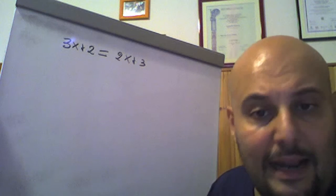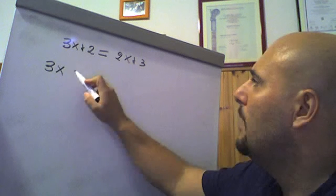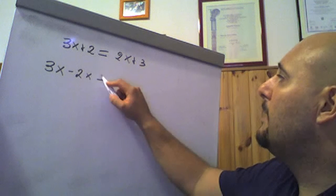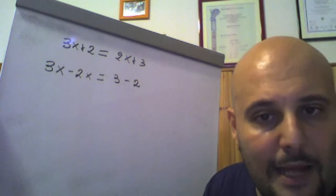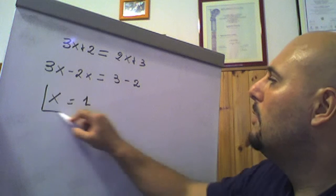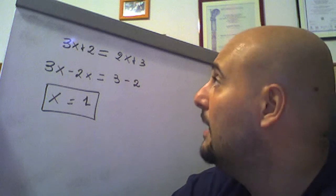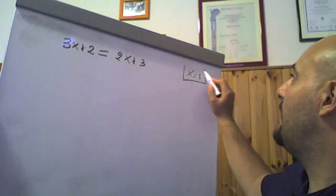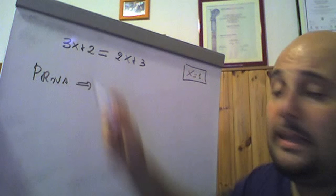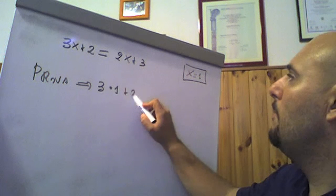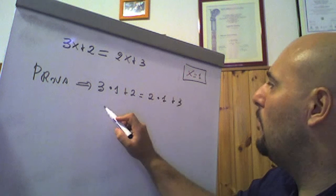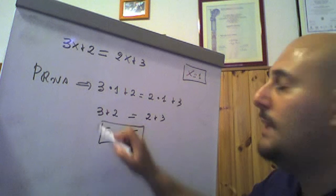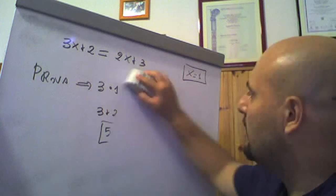In this case we simply apply the transport rule. We have 3x minus 2x — where 3x is left on the left side and 2x is transported from the second member to the first member changing sign — equals 3, leaving 3 on the right and transporting 2 from left to right, also changing sign, obtaining x = 1. x = 1 is the solution of our equation, also called root. For the proof, we substitute x = 1: we get 3·1 + 2 = 2·1 + 3, i.e., 3 + 2 = 2 + 3, giving 5 = 5. Identity absolutely verified, so x = 1 is the solution.